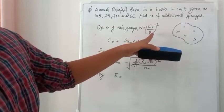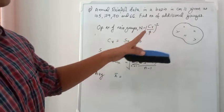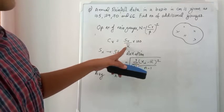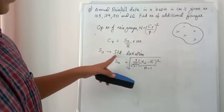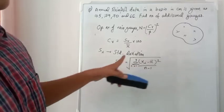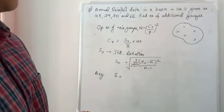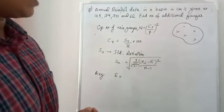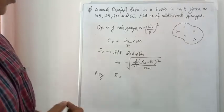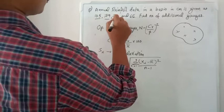So the optimum number of rain gauges is given by N = (CV/P)². P will be assumed later. CV is coefficient of variation of rainfall, given by SX / X̄ × 100, where SX = √[Σ(Xi − X̄)² / (N−1)].